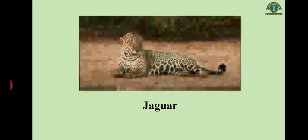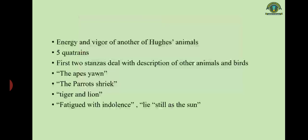From The Thought-Fox we move to the next poem from The Hawk in the Rain — The Jaguar — which represents the energy and vigor of the jaguar. The poem is written in five quatrains. The first two stanzas deal with the description of other animals and birds — apes yawn, parrots shriek, tigers and lions — all appearing fatigued with indolence, lying still as the sun. Cage after cage seems empty because of the stillness of the animals.